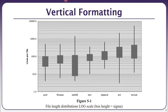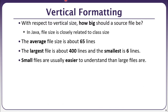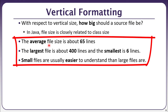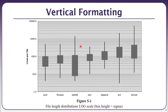To categorize, formatting is divided into two types: vertical formatting, which will be discussed in this part, and horizontal formatting, which will be discussed in the next part. With respect to vertical size — how big a source file should be — the vertical aspects cover the average file size, which is generally said to be no more than 65 lines. The largest file is about 400 lines and the smallest is six lines. These statistics were taken from a number of source files and projects.